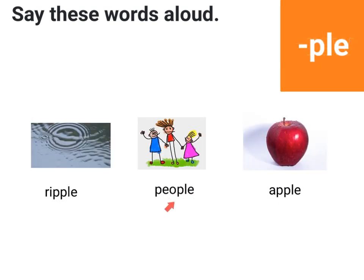Ripple, people, apple. All these three words end with '-ple' and they all belong to the '-ple' family. Ripple — ripples are formed when something touches the water. People — this is what people look like. Apple — this is what an apple looks like; apple is a fruit. Say these words one more time: ripple, people, apple.